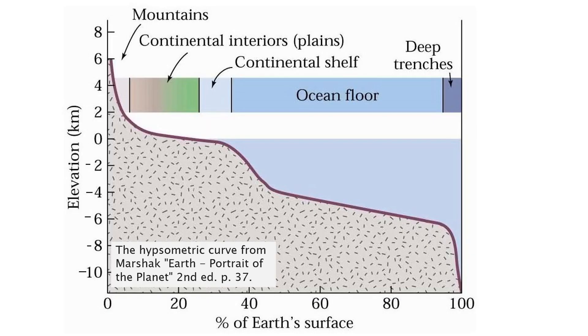A common hypsometric curve in geography textbooks is this one, which shows how Earth has a bimodal elevation distribution, with one major level for most of the oceanic crust and another for most of the continental crust.